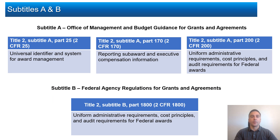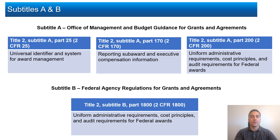This training focuses on the parts of 2 CFR Subtitle A most pertinent to NASA: 2 CFR 25, Universal Identifier and System for Award Management; 2 CFR 170, Reporting Subaward and Executive Compensation Information; and 2 CFR 200, Uniform Administrative Requirements, Cost Principles, and Audit Requirements for Federal Awards. Subtitle B contains regulations from 32 different grant-making federal agencies, and this course focuses on 2 CFR Part 1800, NASA's own codified regulations.